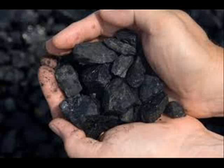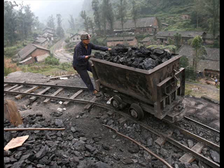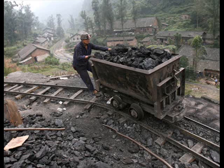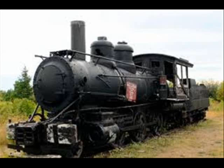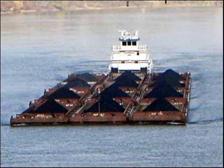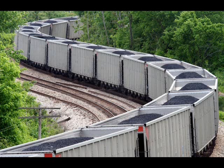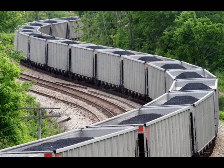Burning coal is one of the most commonly used methods for producing electricity. In the U.S., nearly 46% of the electricity consumed each year is produced through the process of burning coal. The process begins with the delivery of coal to the power plant. Common methods of delivery include the use of trucks, trains, and barges. A large power plant requires a delivery of over 10,000 tons of coal each day — the equivalent of 100 train cars filled with coal.